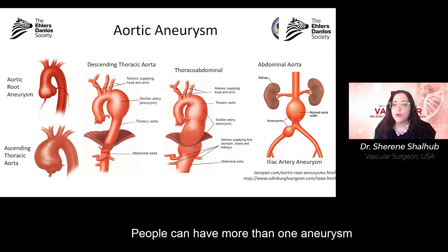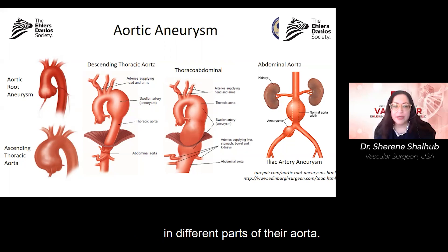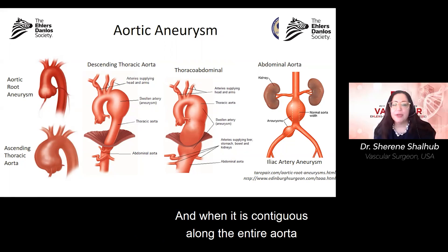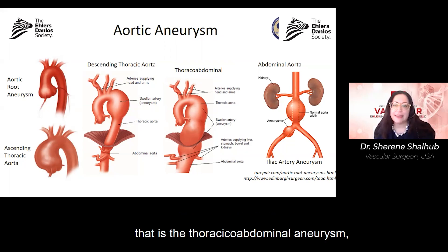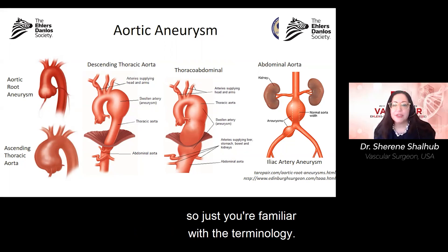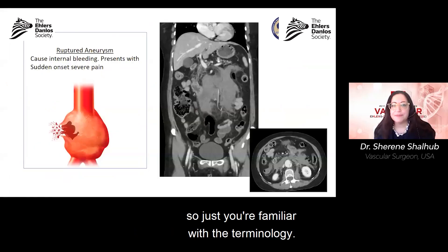People can have more than one aneurysm in different parts of their aorta. When it is contiguous along the entire aorta from the descending to the abdominal aorta, that is called the thoraco-abdominal aneurysm — just so you are familiar with the terminology.